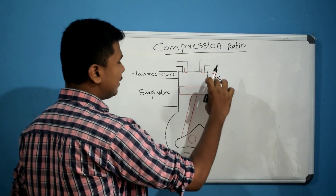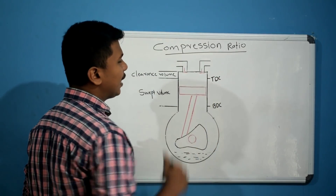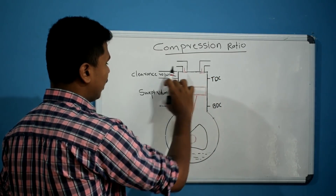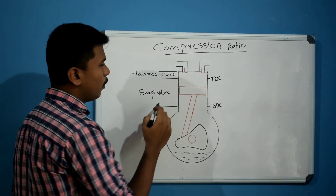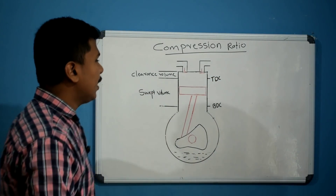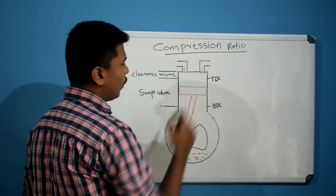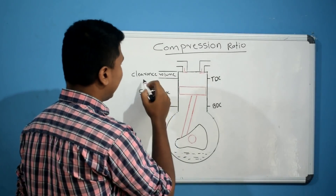So between TDC and BDC, we have a swept volume. The volume at TDC is the same as clearance volume.